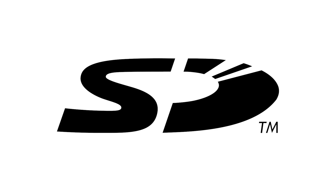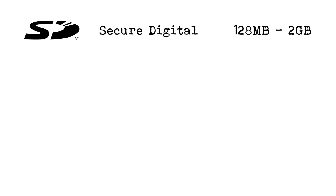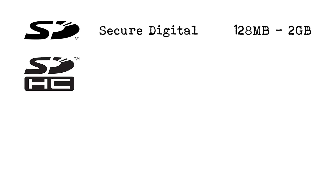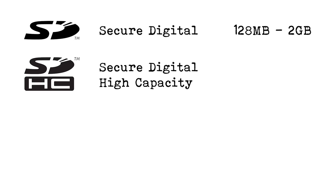There's the basic SD, which is secure digital, and this has card capacities of 128 megabytes to 2 gigabytes. Then you have SDHC — secure digital high capacity — with card capacities of 4 gigabytes to 32 gigabytes.